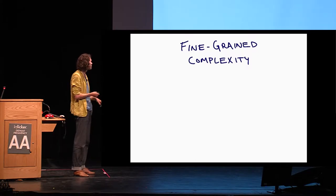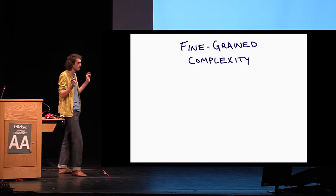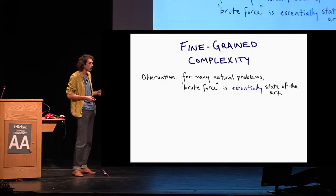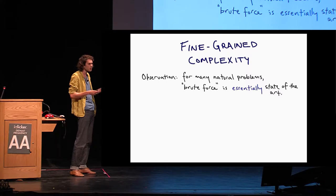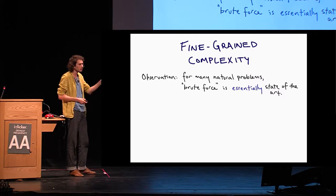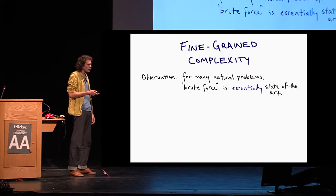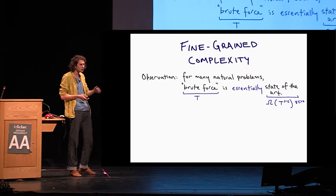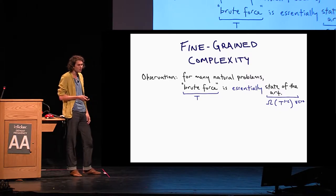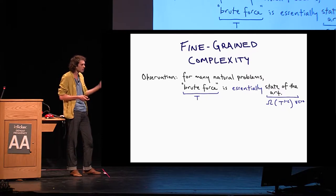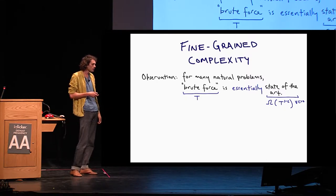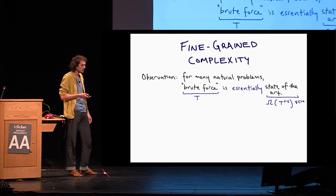Second, we're going to instantiate this recipe with a specific example, orthogonal vectors, and carry it through. And finally, if we have time, we'll talk about some nice properties that come out of this specific proof of work scheme. So, fine-grained complexity. Some of you may not be familiar with this notion. What is fine-grained complexity in a nutshell? It follows from this basic observation: for many natural problems, the brute force procedure, oftentimes this obvious procedure, is essentially comparable to the state of the art, despite lots of work being done by very intelligent people to improve these parameters.